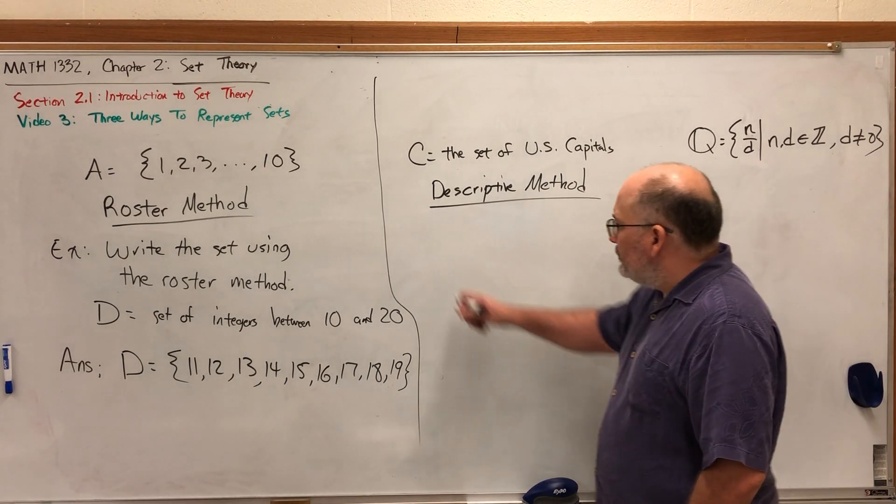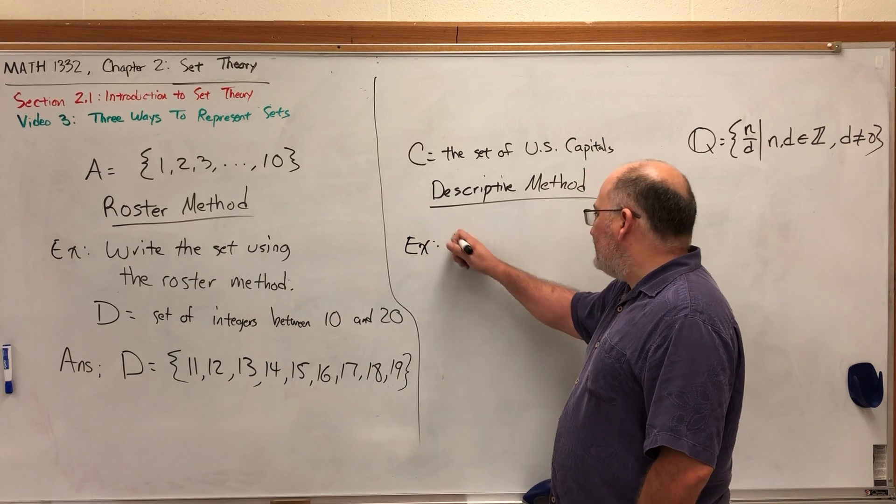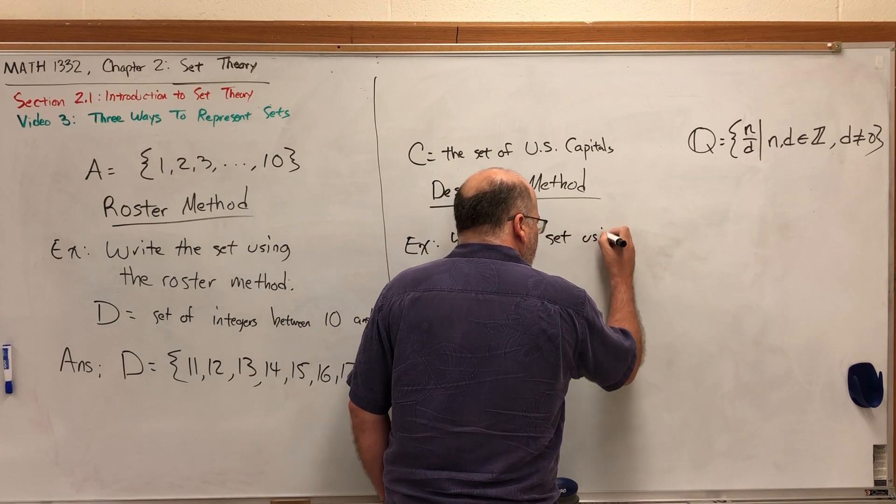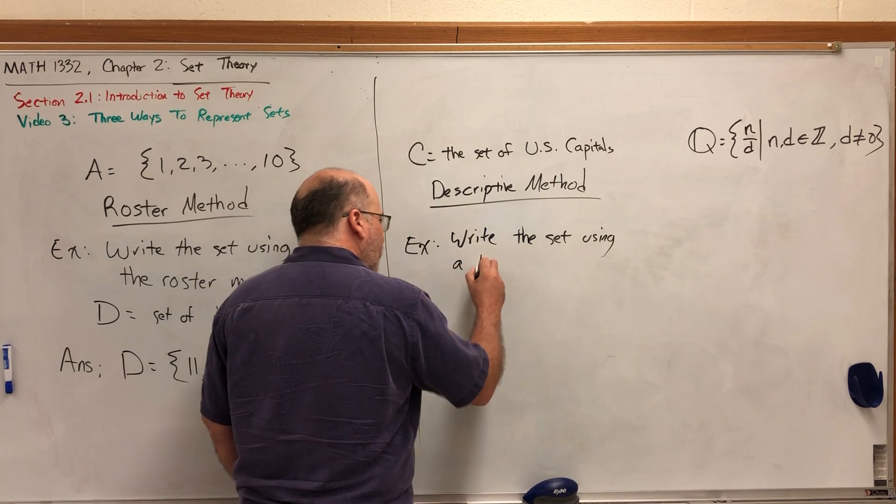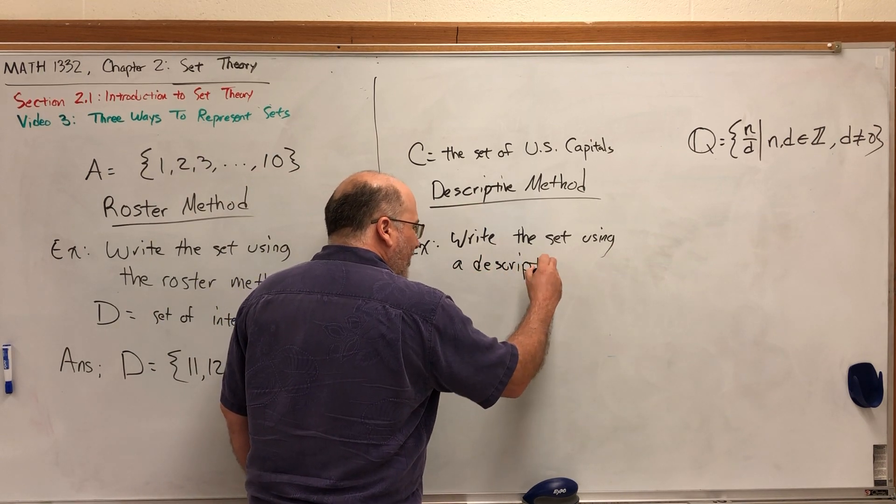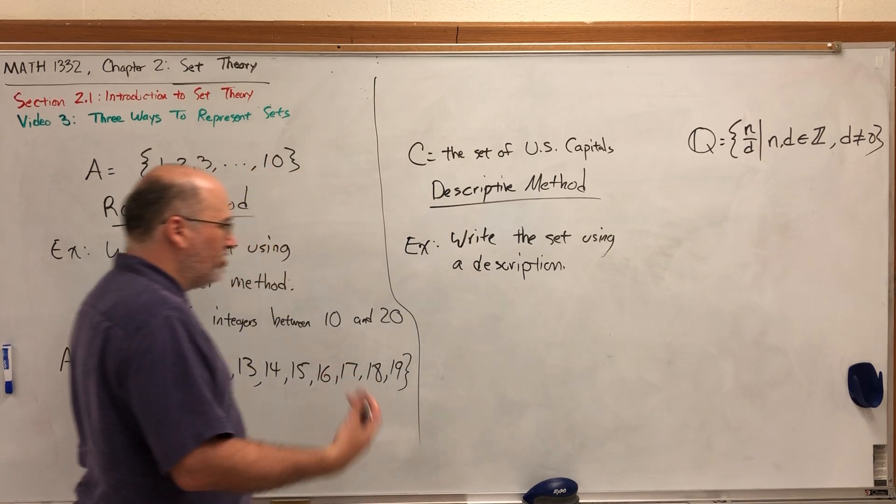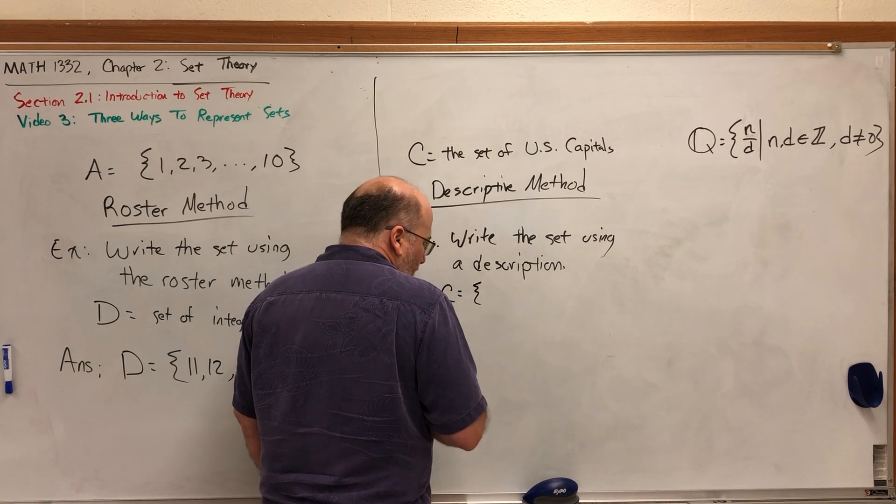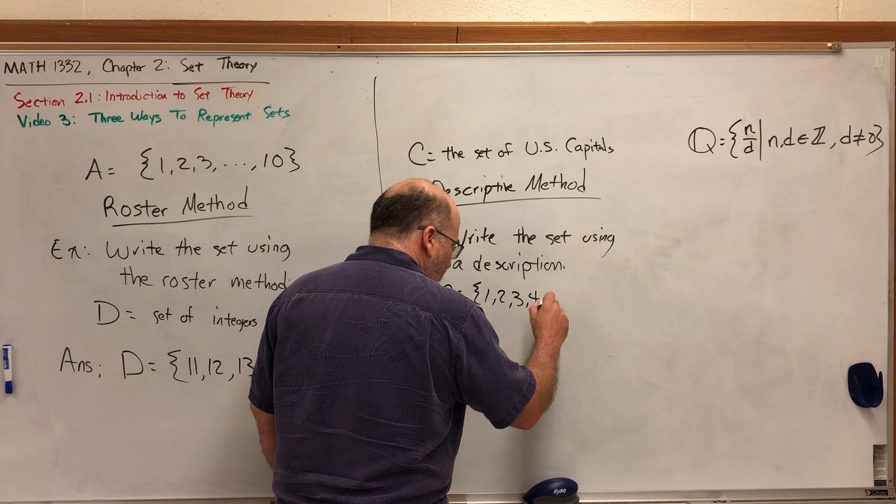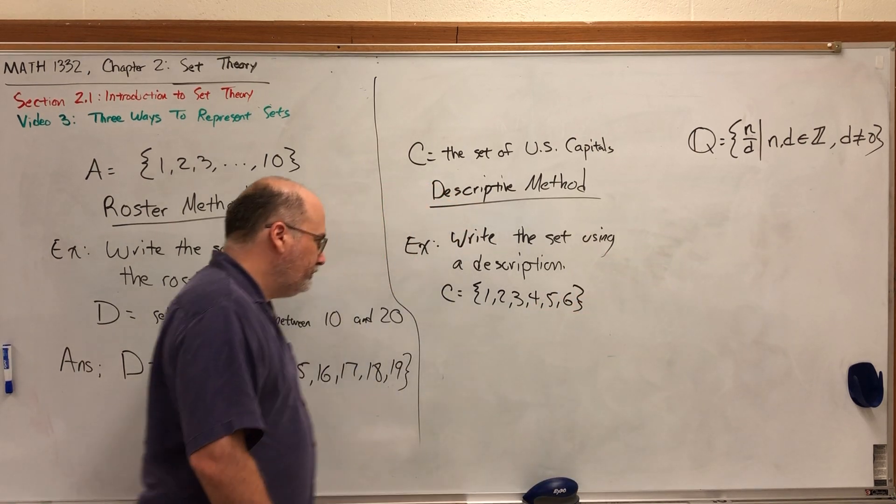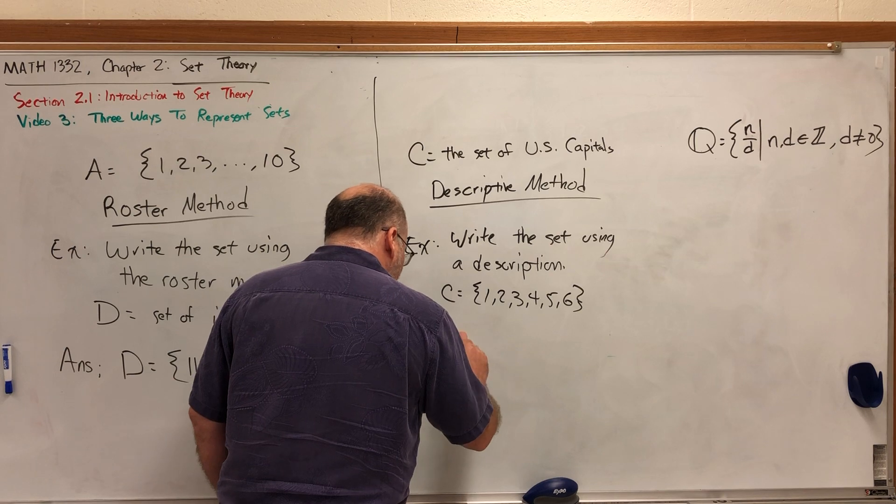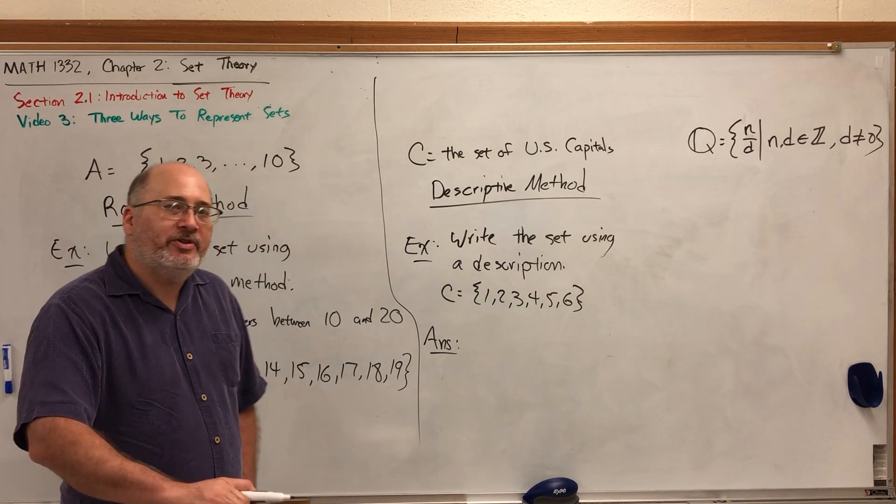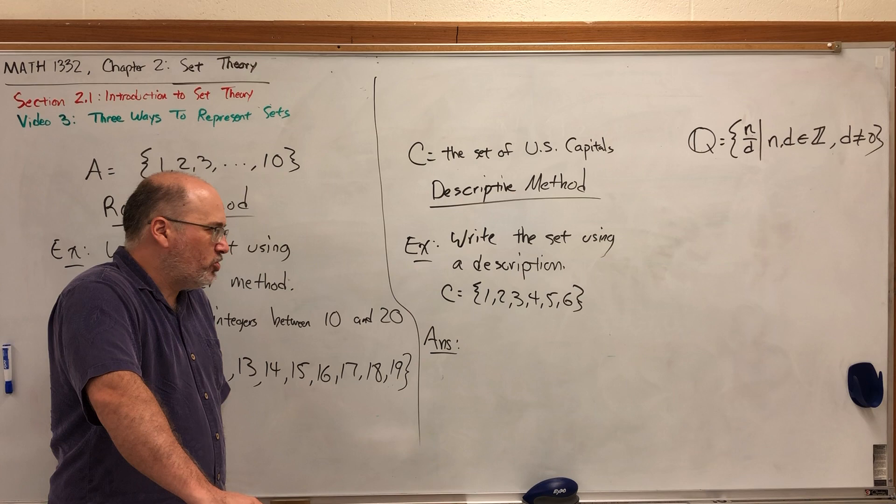So for example, let's say I ask you to write the set using the descriptive method, we could say using a description, anything that implies you're going to describe the elements of a set as opposed to list them out. Now let's say the set is C equals 1, 2, 3, 4, 5, 6. Now why would we need to describe the set when it was so easy to list them? Because sometimes sets are so large that it's inconvenient to list their elements and rather describe them. How can we describe these numbers?